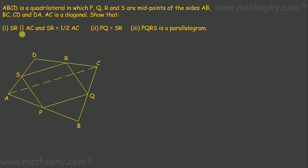What we have to prove here is: SR is parallel to diagonal AC and SR is half of AC. Then we have to prove PQ equals SR. And at the end we have to prove that PQRS is a parallelogram.